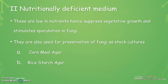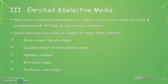The second category is nutritionally deficient medium. This medium enhances spore formation because it contains only low nutrients, creating an unfavorable condition that suppresses vegetative growth and stimulates sporulation in fungi. The two important media used are cornmeal agar and rice starch agar. These media can also be used for preservation of fungi as stock cultures.